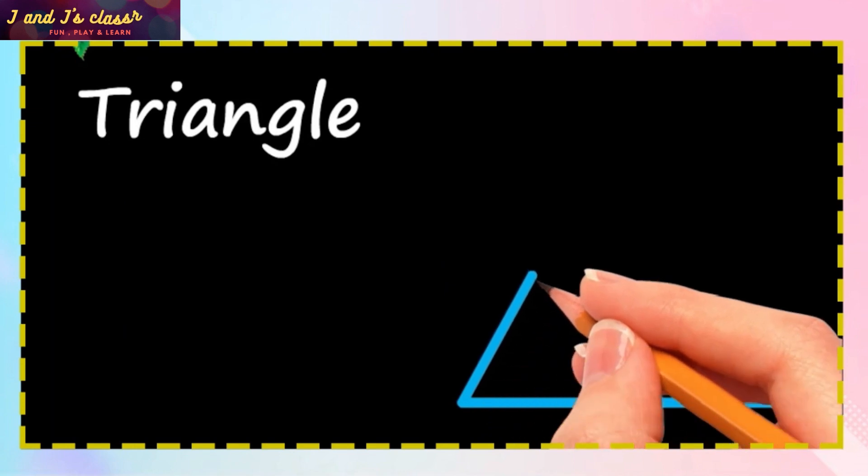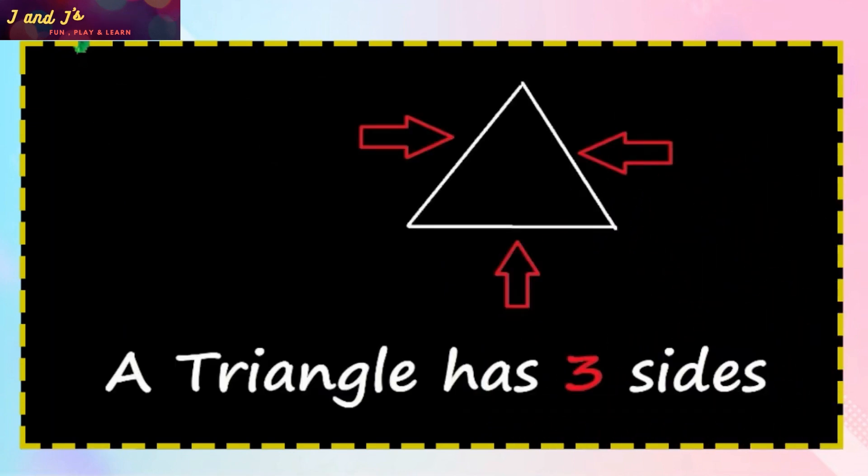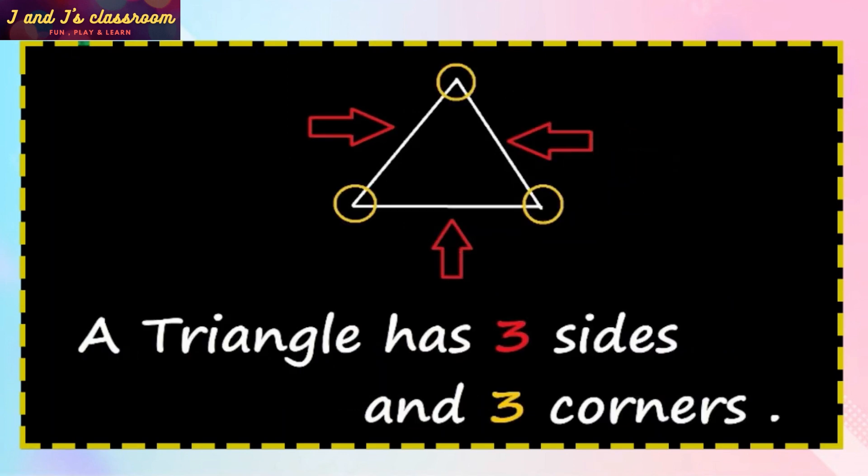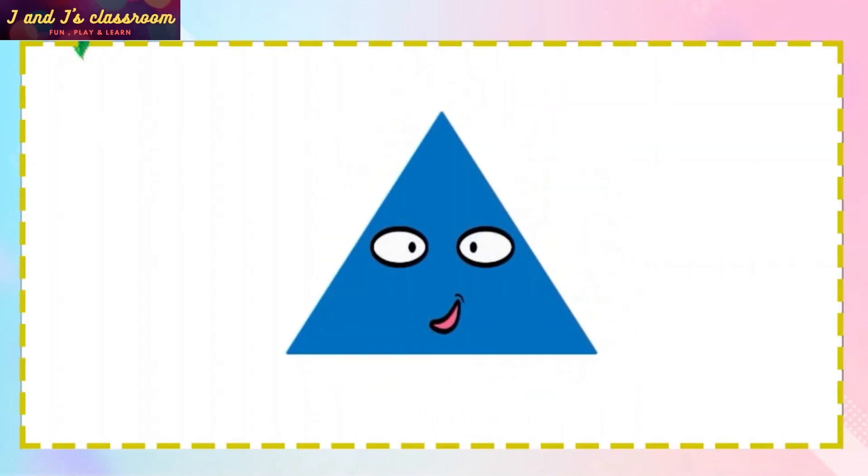Triangle. 1, 2, 3. Draw 3 straight lines. What is triangle? A triangle has 3 sides and 3 corners.